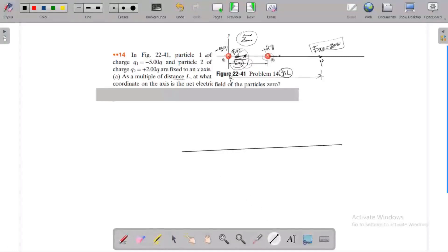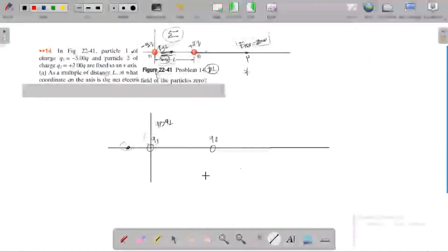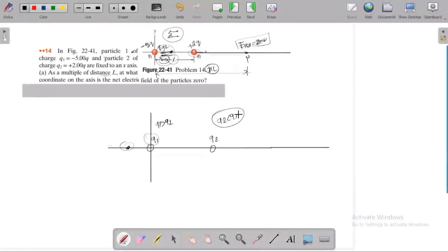Let me redraw this. This is Q1, this is Q2. If we choose the point here, Q1 is greater than Q2 in magnitude, so the point must be on the right-hand side. The point P is where the electric fields can cancel since Q1 has magnitude 5 and Q2 has magnitude 2.